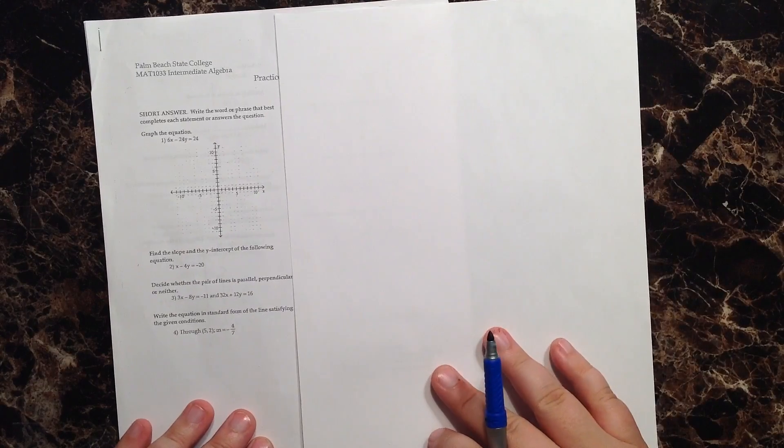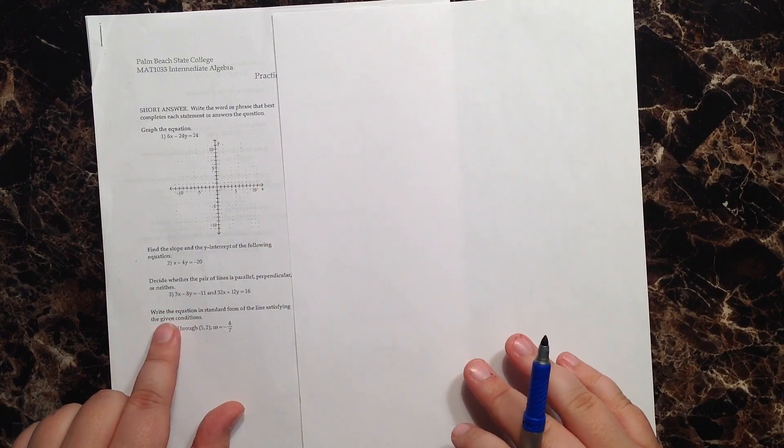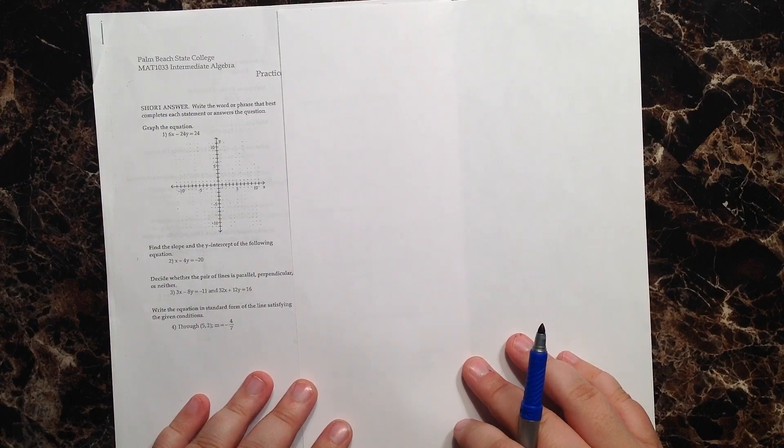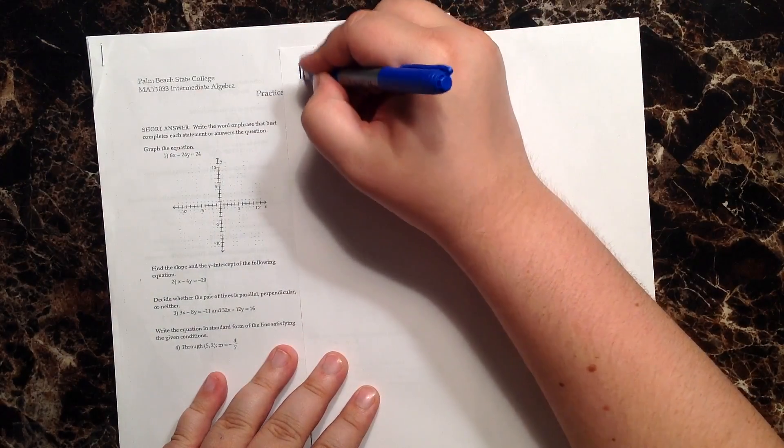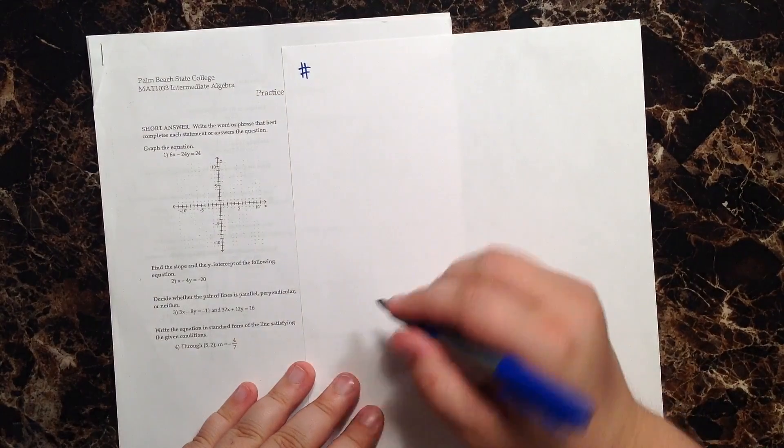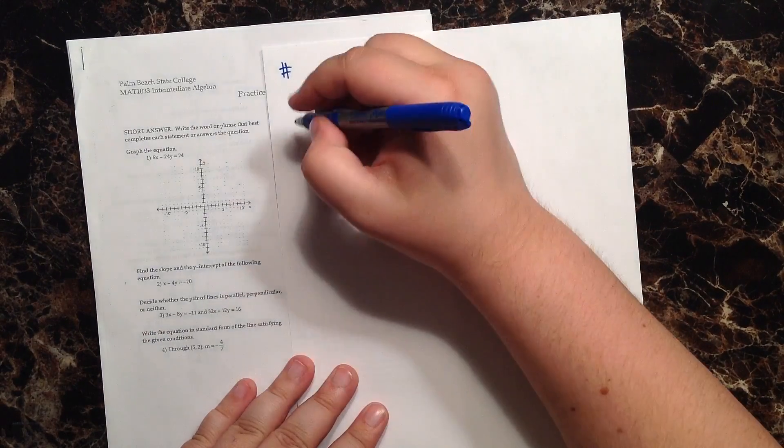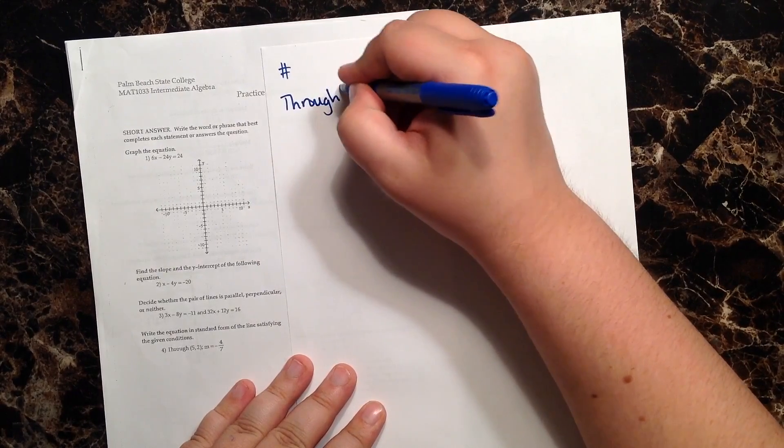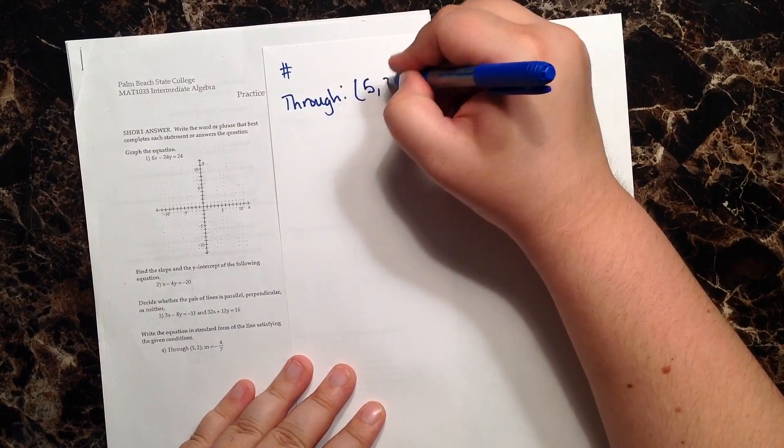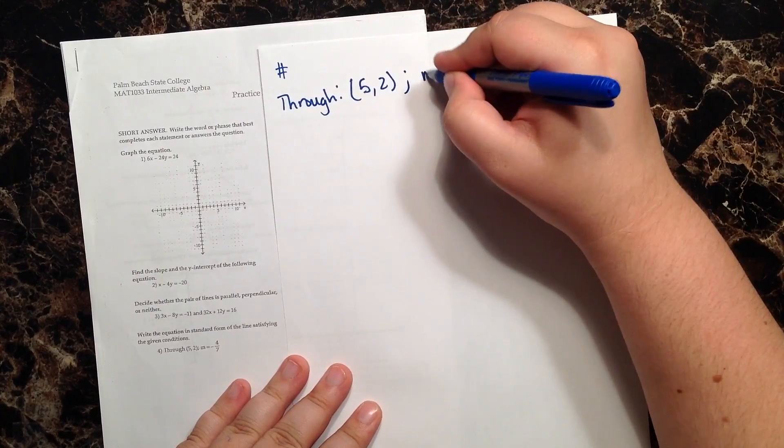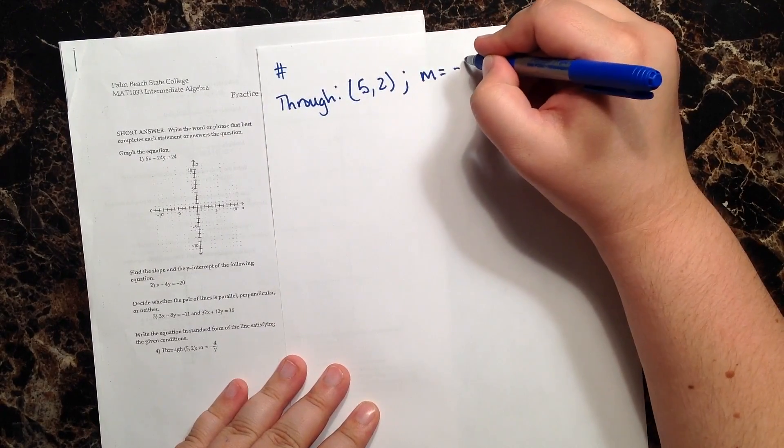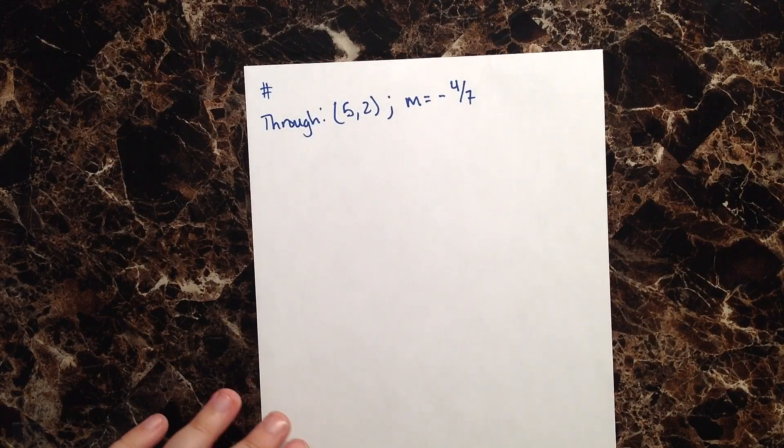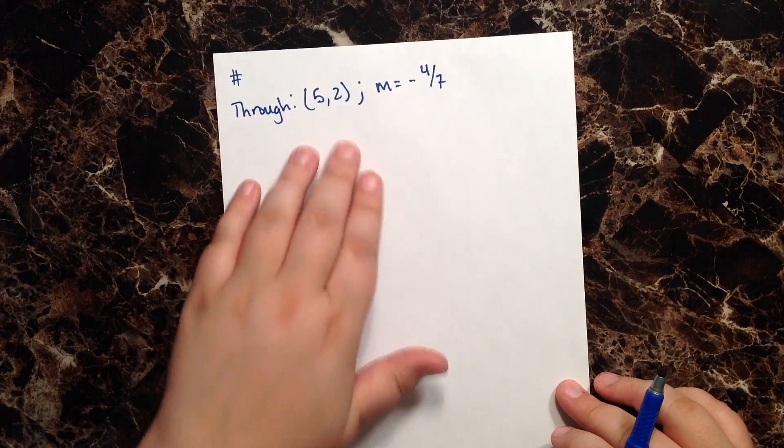All right, so the directions for question number four say to write the equation in standard form of the line satisfying the given conditions. So they want us to write the equation of a line that goes through the point (5, 2) and has a slope of negative four over seven. We'll put that aside and deal with what they've given us.